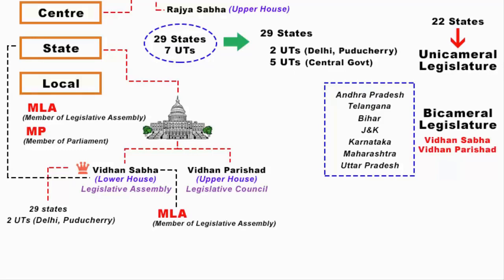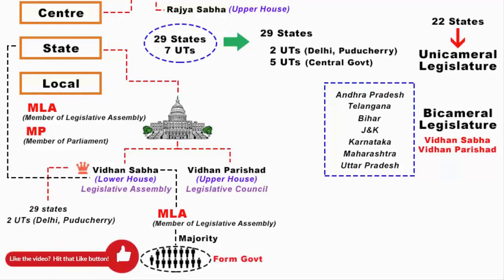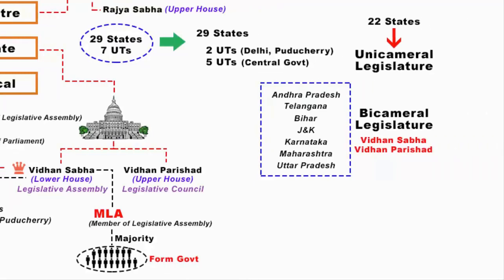At the state level, MLAs represent the collective voice and will of the people. To elect MLAs, each state is divided into constituencies. Every state has a different number of constituencies depending on the number of seats in their respective State Legislative Assembly. Currently, the state with the most constituencies is the Uttar Pradesh Legislative Assembly, followed by West Bengal, Maharashtra and Bihar.